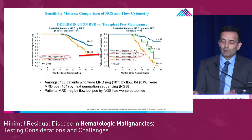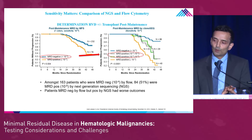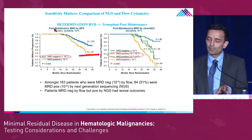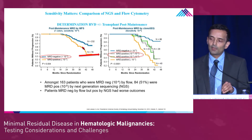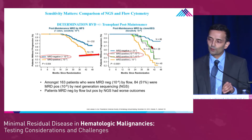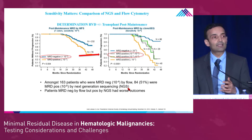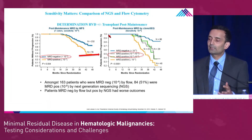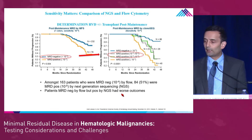Does sensitivity matter? Absolutely. In that same RVD plus-minus transplant study, patients who were MRD negative by flow did better than those who were positive. But when you take those who were MRD negative and break them down by next-gen sequencing, you can further risk stratify them — highlighting that the difference between 10⁻⁵ and 10⁻⁶ has a clinical impact. If you're acting on a less sensitive test, how is that going to impact your patients?